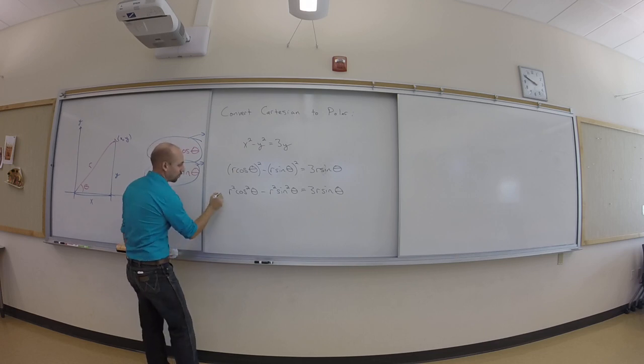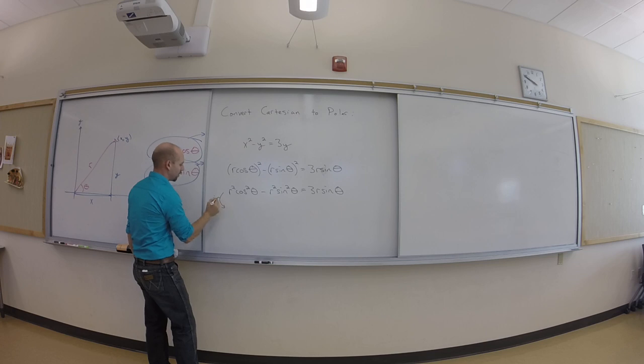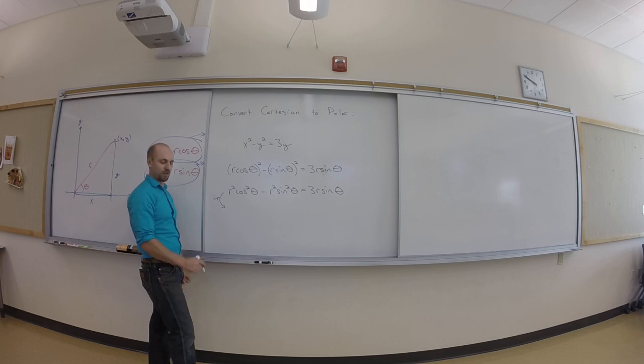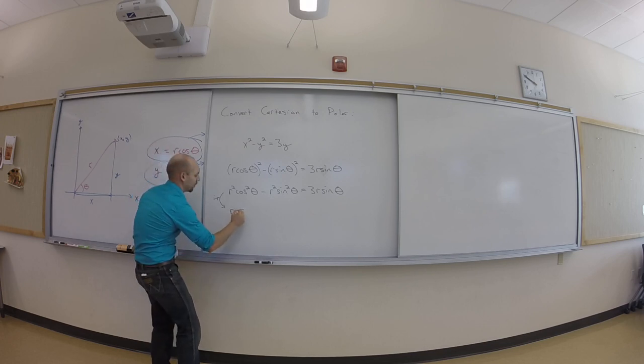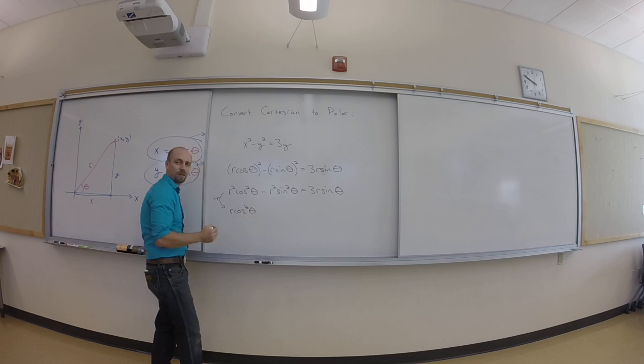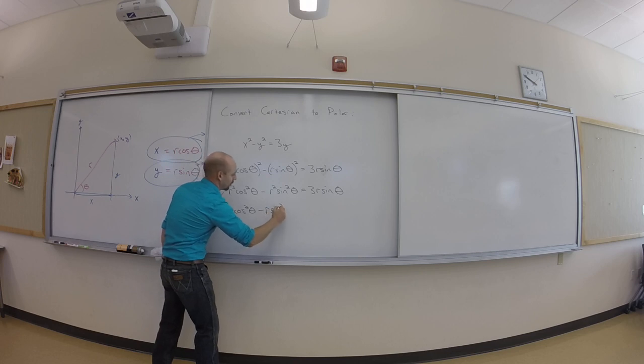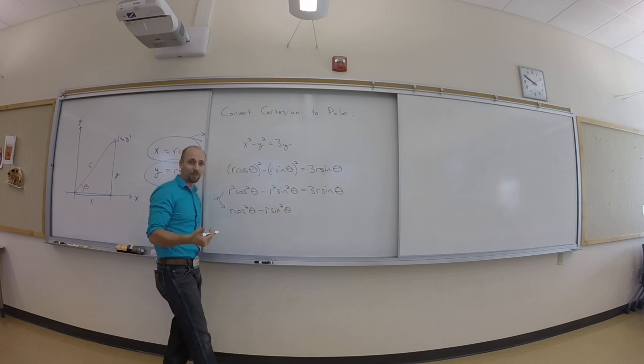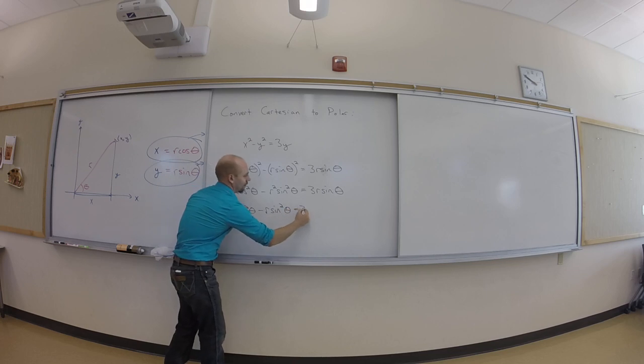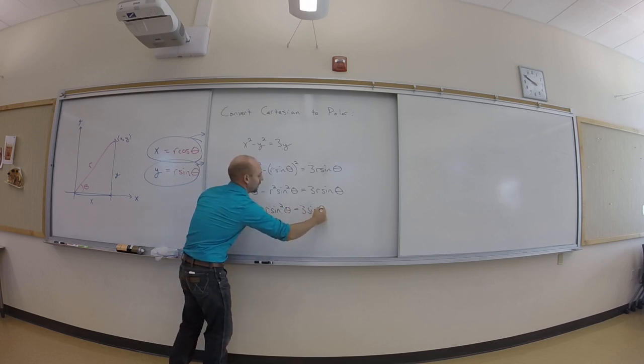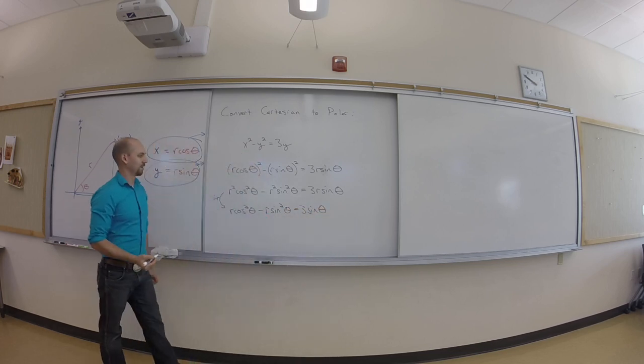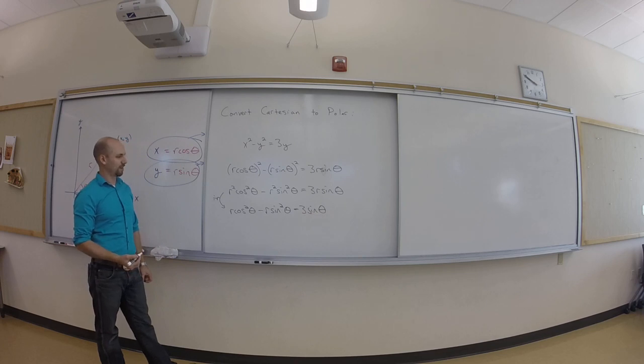That's a good idea, sure. We can divide the whole thing by an R. So what am I going to be left with on the left-hand side here? R cosine squared Theta minus R sine squared Theta, right, because I had to divide all the terms, is 3 sine Theta. Okay, what else could you do?